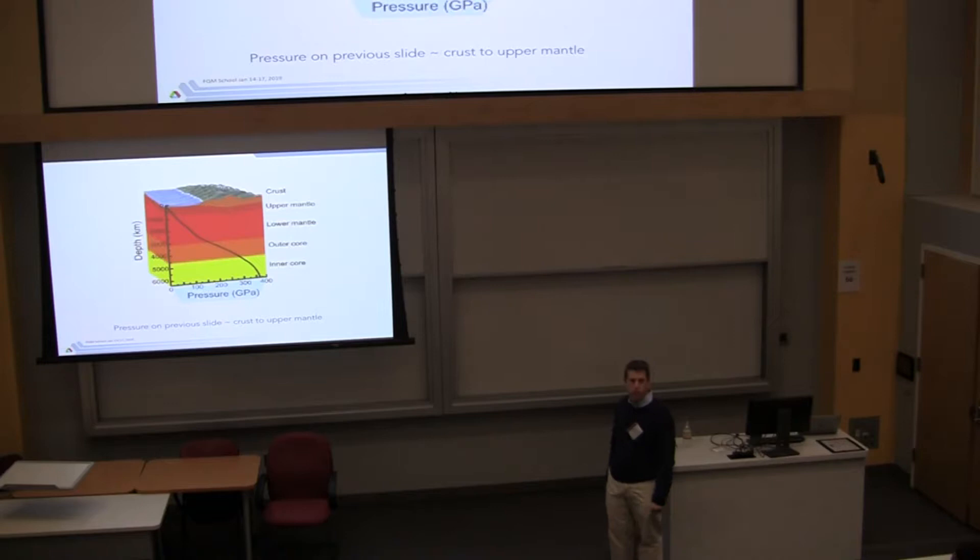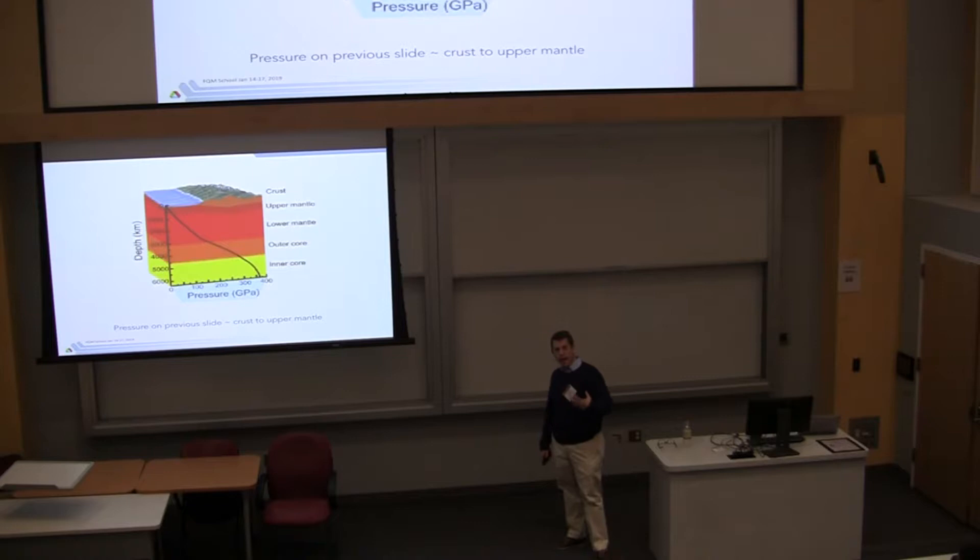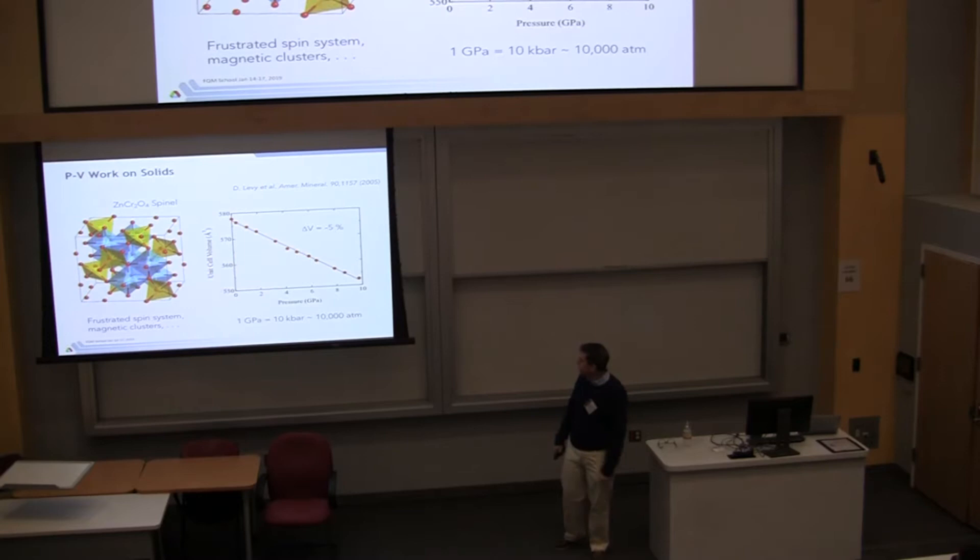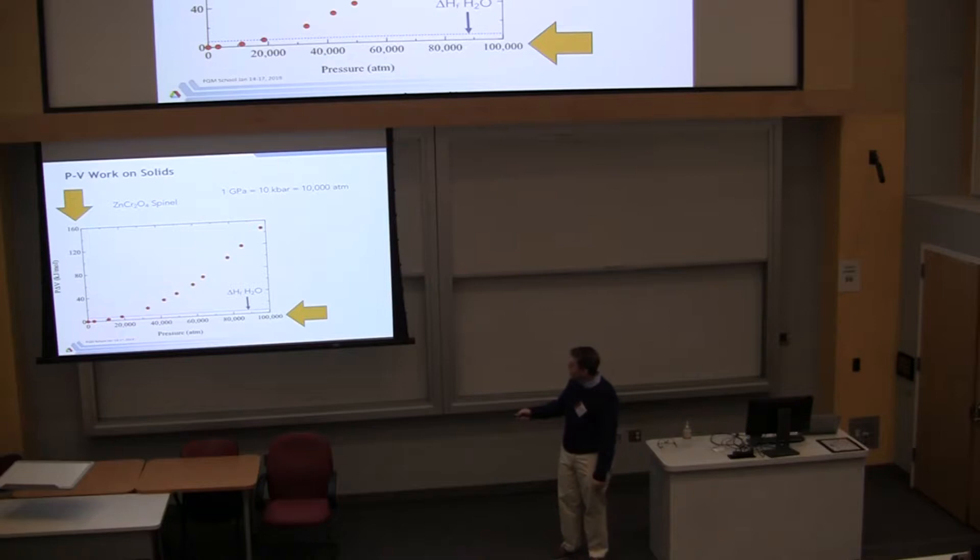So I put a couple things here to give you a scale. So if you wanted to form water from the elements, oxygen and hydrogen, it costs you 286 kilojoules per mole. You get 286 kilojoules per mole. So there you can see these are similar kinds of numbers. So there's a lot of energy that you can do by pressing a cylinder with a piston. That's why the steam engine can move. Here's another thing. Like if you melt water, it's six kilojoules per mole.